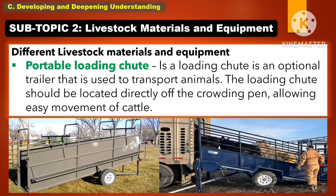Another livestock material and equipment is the portable loading chute. It is an optional trailer used to transport animals. The loading chute should be located directly off the crowding pin, allowing easy movement of cattle.